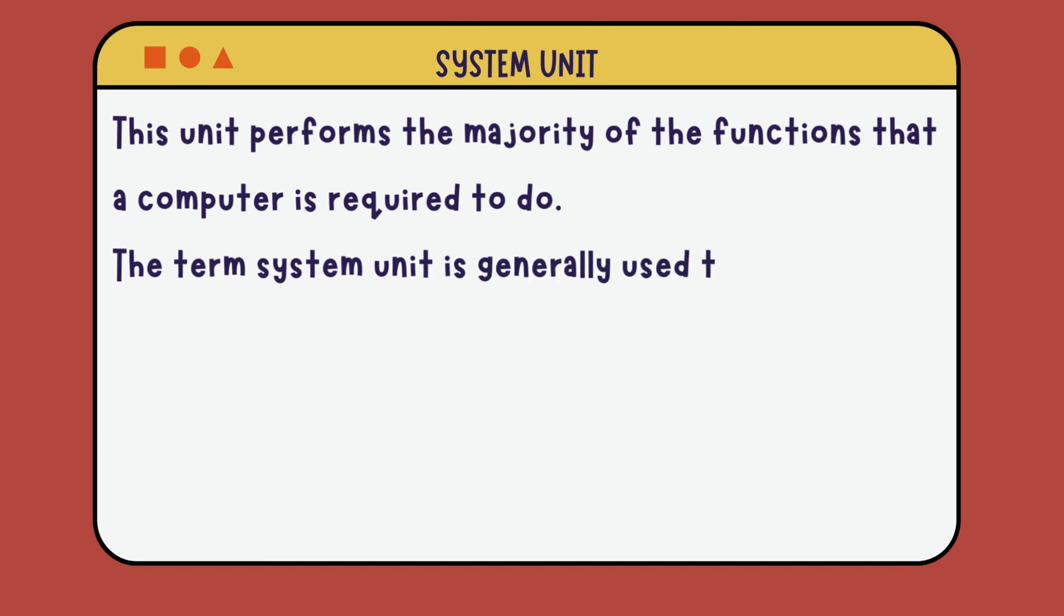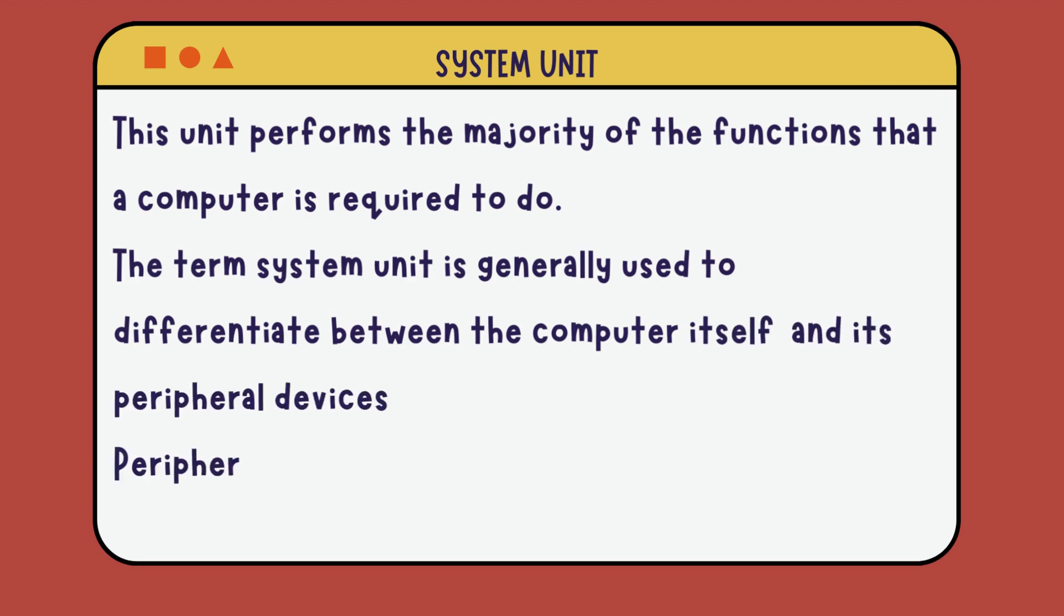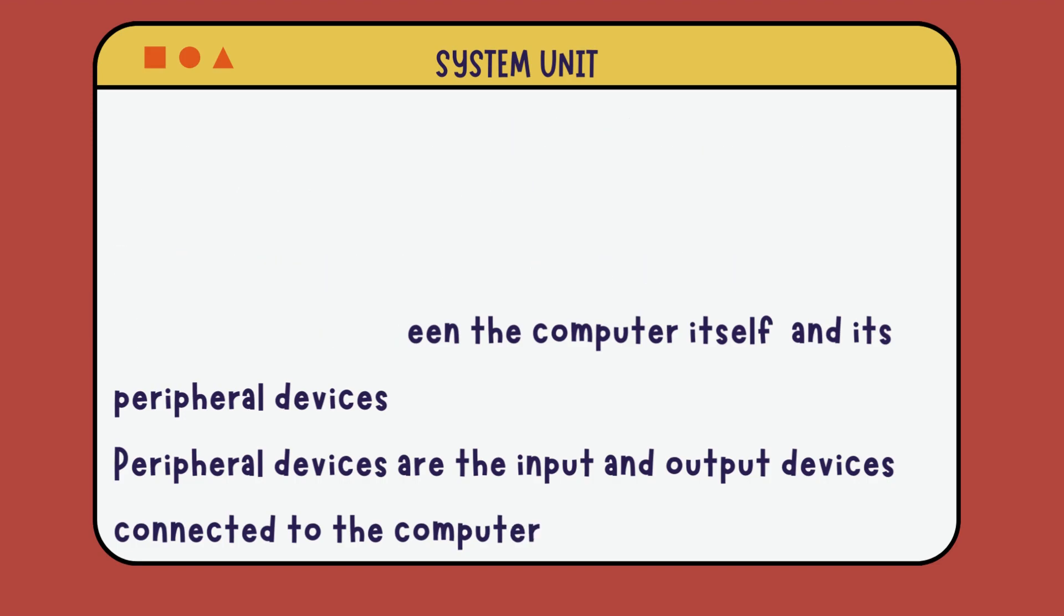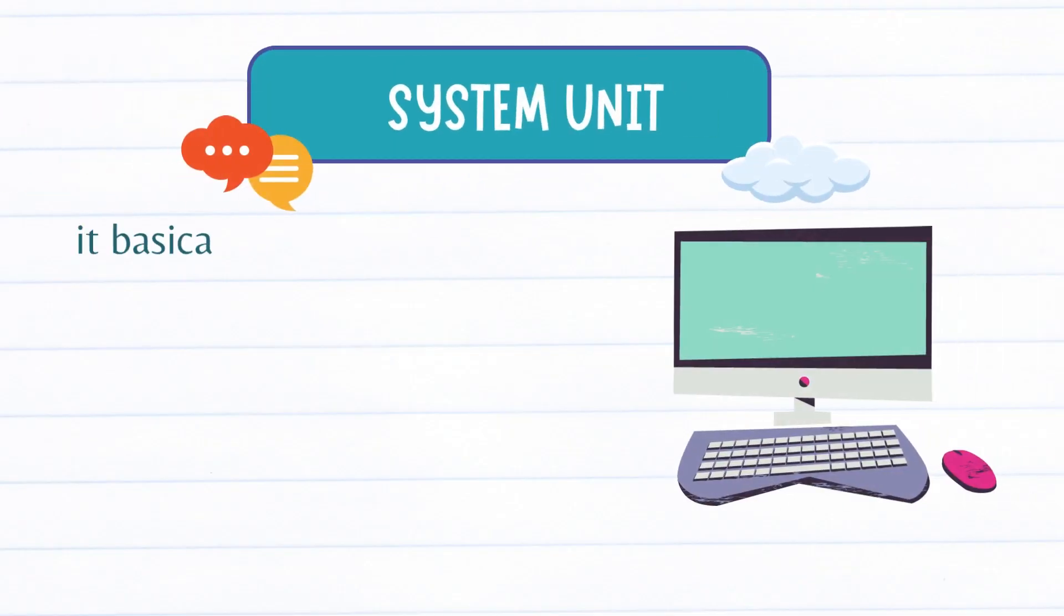What are peripheral devices? Those are the input and output devices that are connected to the computer. We'll discuss the input and output devices in detail in this lesson. The system unit actually holds the system devices that perform the calculations.